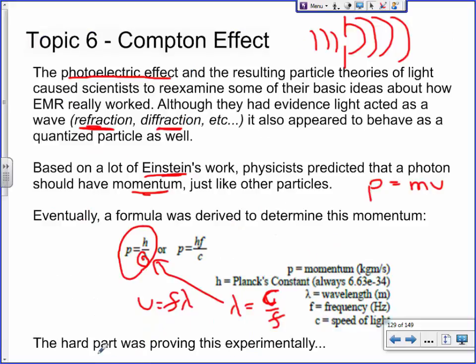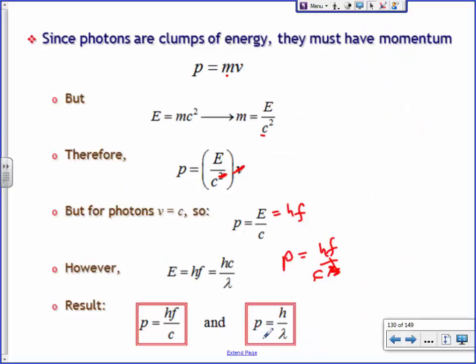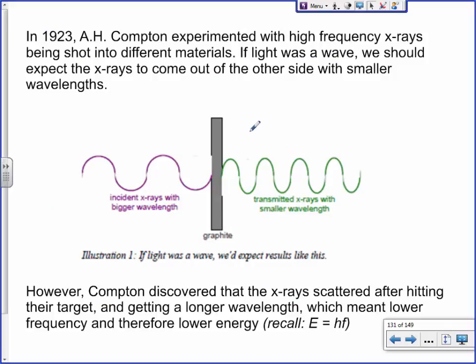They had to try to prove this experimentally. Maybe you guys watch Big Bang Theory — Sheldon is a theoretical physicist who does a lot of work on paper or whiteboards, trying to prove things that in his head should be true. Here we've theoretically come up with a formula for the momentum of a photon. But Leonard actually goes out into a lab and tests these theories to prove they're true. That was the hard part. Here's the guy you should know: his name is Compton — hence the term the Compton Effect. It wasn't until 1923, about 20 years after Planck's work in 1900.